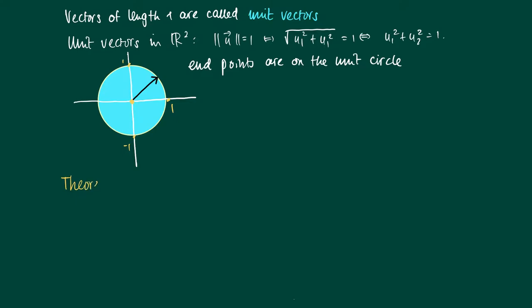We have the following theorem: suppose we have a vector v not equal to zero, an arbitrary vector in Rⁿ. Then we can find pretty easily a vector that has length one and has the same direction as v. This vector is given by u, which is just the normalized vector, which is the vector v divided by its length, and this is a unit vector.